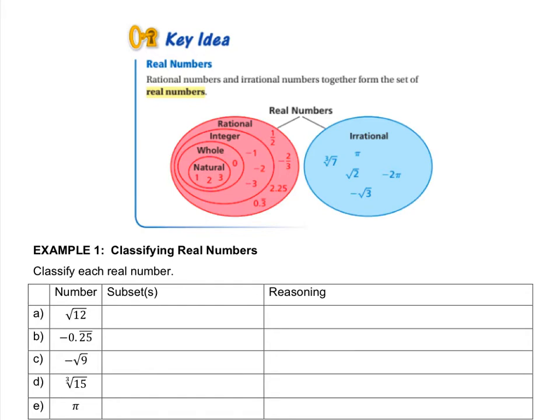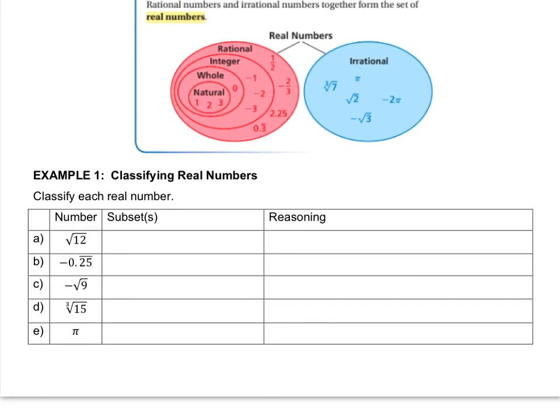So what we're going to do down below is it's going to give us a couple of numbers, and we have to say which category we think it would fit in, and then just give a little brief reason why. So which category do you think square root of 12 would be? Would it be natural, whole, integer, rational, or irrational?